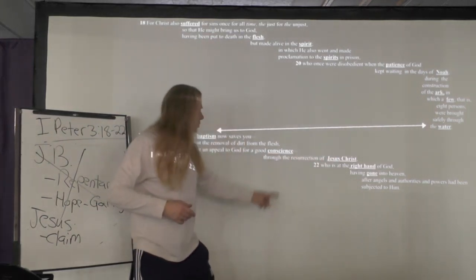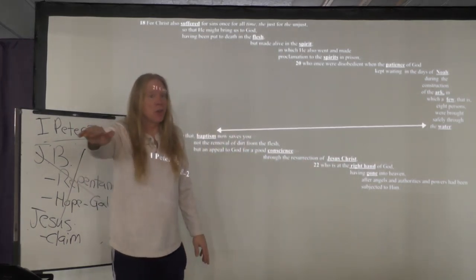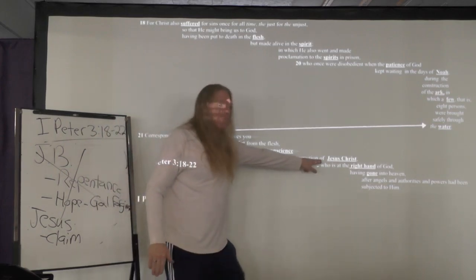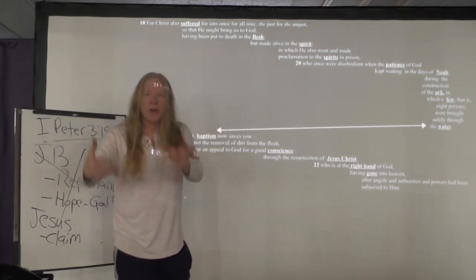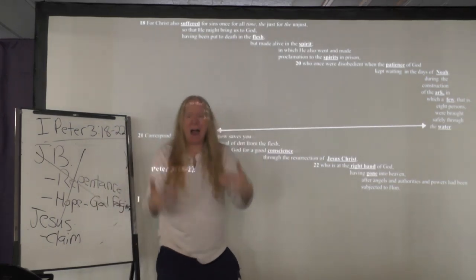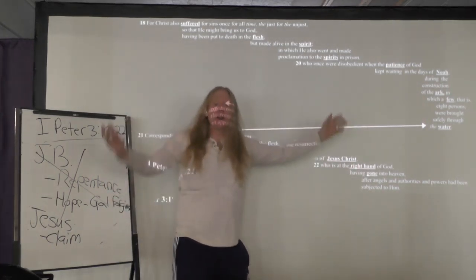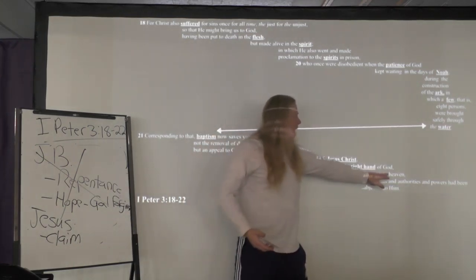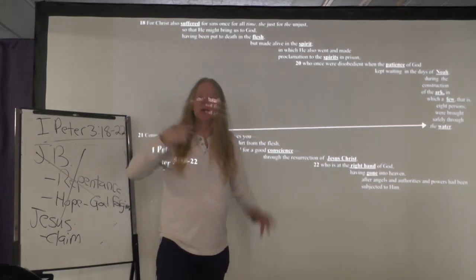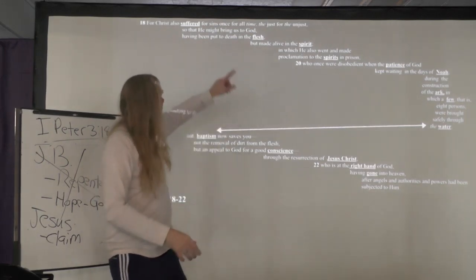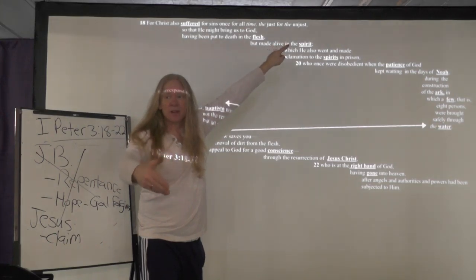So baptism saves us, not as removal of dirt, but as an appeal to God by Jesus for our good conscience. How? Through the resurrection of Jesus Christ. That thing is set free because of what Jesus Christ has done. Again, nothing about you. Now we're going to develop Jesus Christ, who is at the right hand of God. So now we know that Jesus, the one in whom we are celebrating, has the power to set us free. Because where is he? He's at the right hand of God. How did he get from the right hand to the right hand of God? Having gone into heaven after the angels and powers had been subjected to heaven. All things are now subjected to him. So Jesus has the ability to do what? Suffer sin on our behalf and set us free.